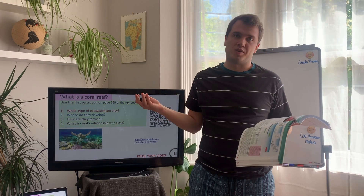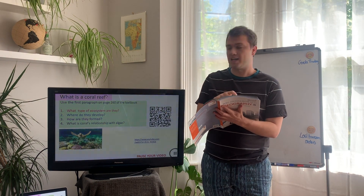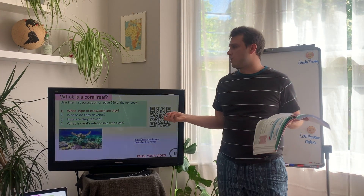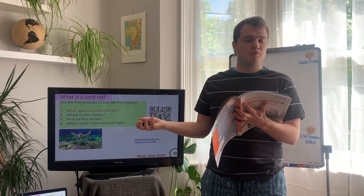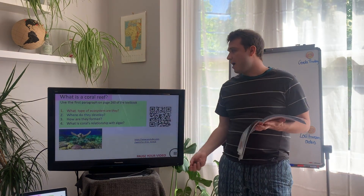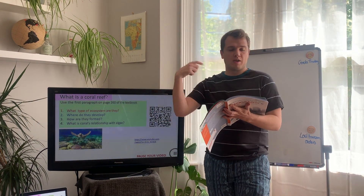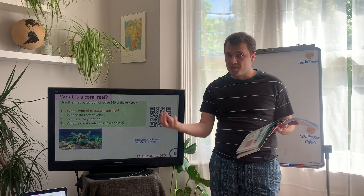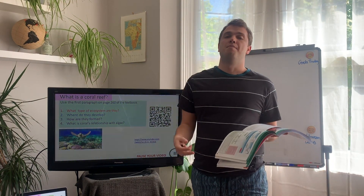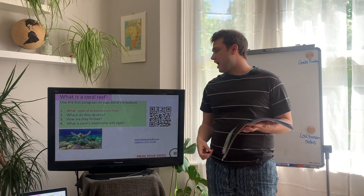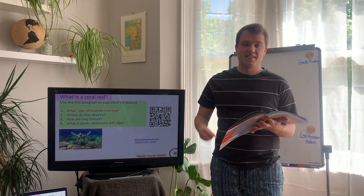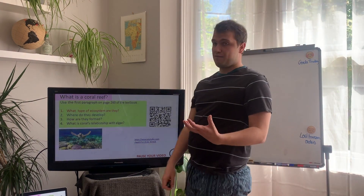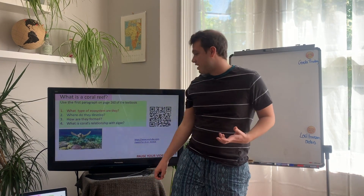To answer those questions you basically just have to read the first paragraph of the textbook. Our first question: what type of ecosystem are they? Coral reefs are marine ecosystems. Where do they develop? In places with warm tropical water. How are they formed? Around coral polyps that group together, feed on algae, and grow into coral reefs. And the coral's relationship with algae is symbiotic - they rely on each other.